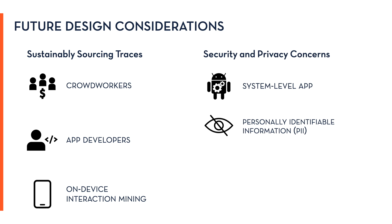There are also security and privacy concerns Savant would need to address. Savant leverages a system-level app because it requires two special permissions to automatically navigate users to task-relevant UI screens. For a security problem to occur, the trace Savant uses would need to contain malicious UI screens and interactions, which is unlikely since Google Play Store already has measures to detect and prevent such apps. In addition, Savant faces the risk of exposing personally identifiable information, as with any system that leverages user interaction data. One solution is to provide sock puppet accounts that trace contributors can use to explore apps.